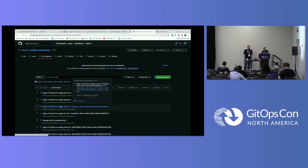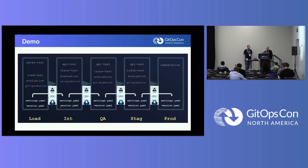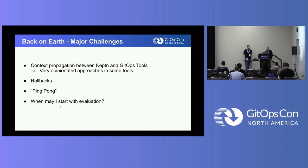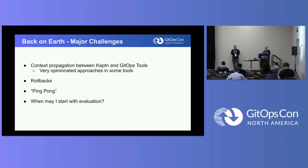Thomas will now talk about our findings. Some major challenges: rollbacks are very difficult. There can be so many scenarios — if you keep rolling back and that fails it keeps going around in a circle. We found it to be quite a ping-pong situation.